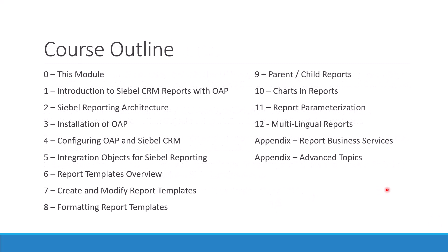Here's the agenda for the course. We are in the introduction module, and next we will start with an introduction to Siebel CRM reports with Oracle Analytics Publisher, then go into the technical installation and configuration chapters — starting with a detailed look at the architecture, installation of OAP, and configuration of OAP with Siebel CRM. Chapter 5 starts the developer chapters, for editing and understanding integration objects for Siebel reporting, and from chapter 6 onwards you will work with report templates in great detail.